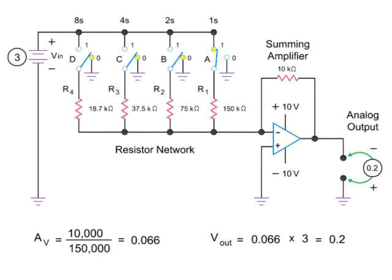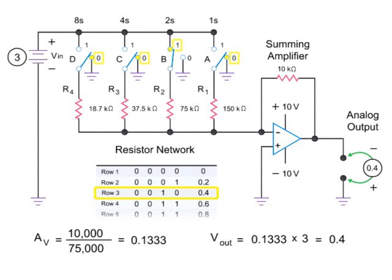Applying a binary of 0.010 will move switch B to logic position 1, resulting in an input of 75 kilohms. Plugging these numbers in the equation gives a gain of 0.1333, resulting in an output of 0.4 volts when the input voltage is multiplied by the gain. Again, this result conforms to what is expected based on the truth table.